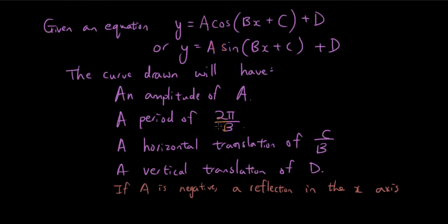One more thing I need to add is if a is negative, then the amplitude is still a, but the graph will be upside down. It will be a reflection in the x-axis.